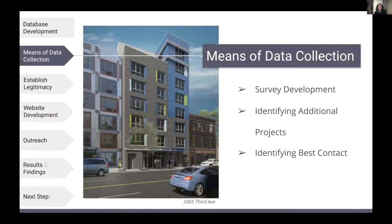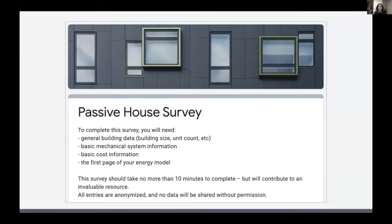As we planned our data collection process, we settled on these key components: developing a user-friendly survey as the primary means of data collection, identifying additional multi-family passive house projects around the country, and identifying the best contact person for each project — such as the architect, developer, or contractor. It was critical that the survey be as automated as possible, incorporating single choice, multiple choice, and check-all-that-apply answer choices.